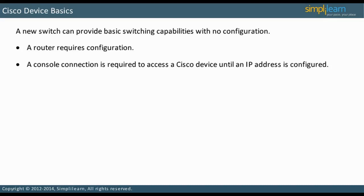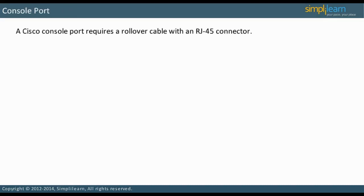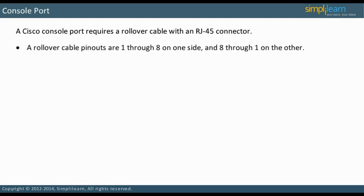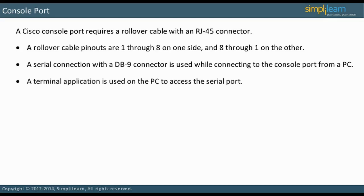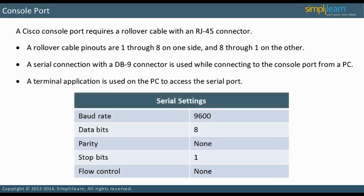A Cisco console port requires a rollover cable with an RJ45 connector. A rollover cable's pinouts are 1-8 on one side and 8-1 on the other. To connect to the console port from a PC, a serial connection with a DB9 connector is used. To access the serial port, use a terminal application on the PC.